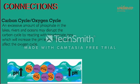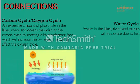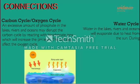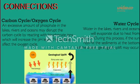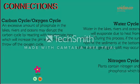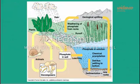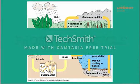Water cycle: Water in the lakes, rivers, and oceans will evaporate due to heat from the sun. During this process, if the sun rays hit the sediments at the bottom of the ocean, geological uplift may occur. Nitrogen cycle: Plants contain nitrogen and phosphorus, which both help in the growth of a plant. That concludes our lesson about the phosphorus cycle today. Thanks for watching!